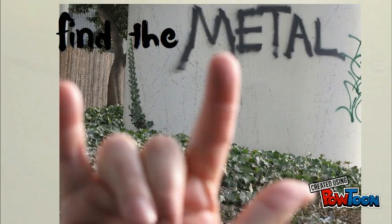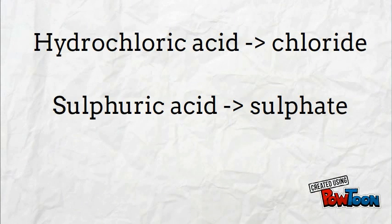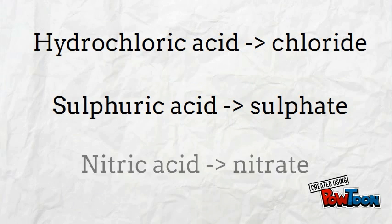The first thing you must find is the metal. Then you look at the acid. Hydrochloric acid makes a chloride. Sulfuric acid makes a sulfate. Nitric acid always makes a nitrate.